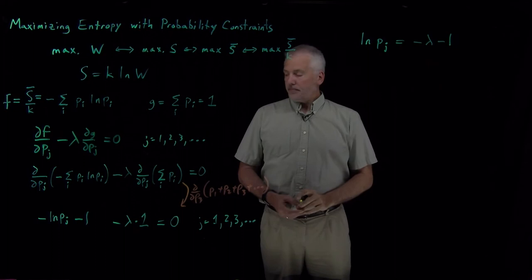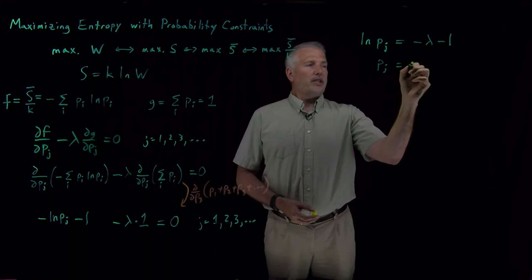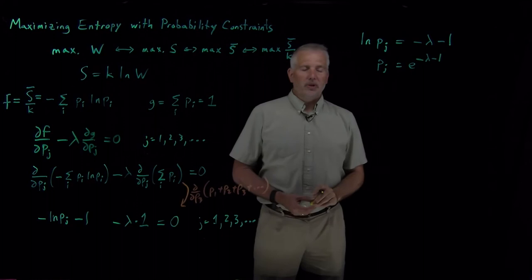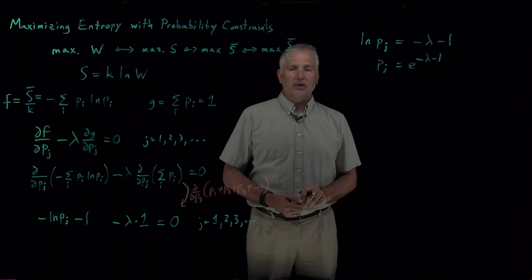Undoing the log, Pj is e to the minus lambda minus 1. This is looking similar, quite similar to the problem we did with a coin flip. But the difference now being we don't just have two options, we have lots of possible options for what each molecule can be.